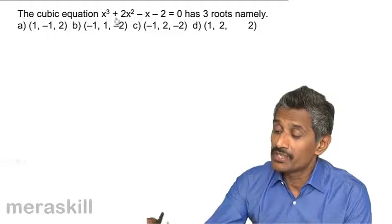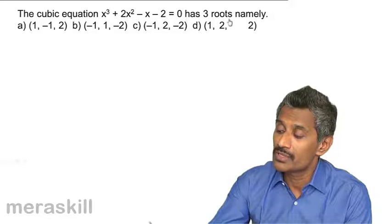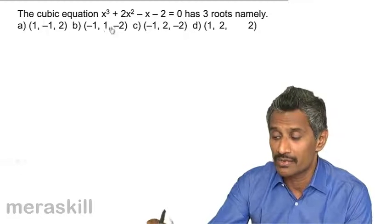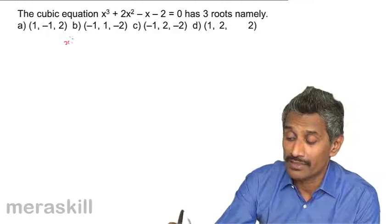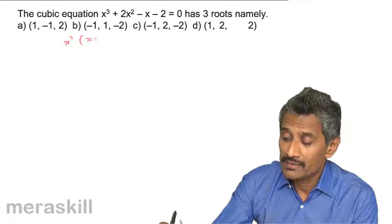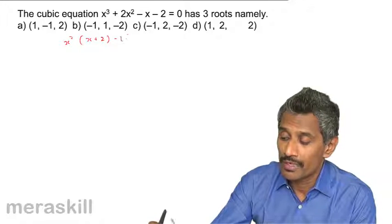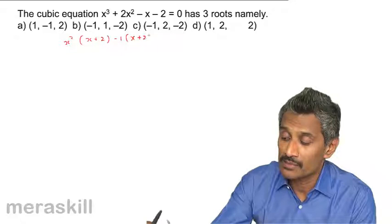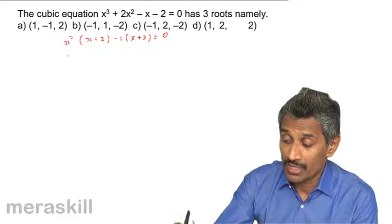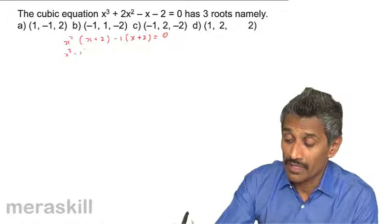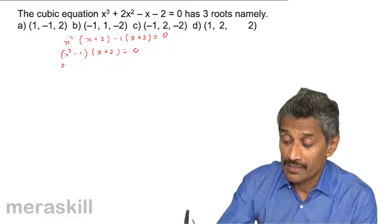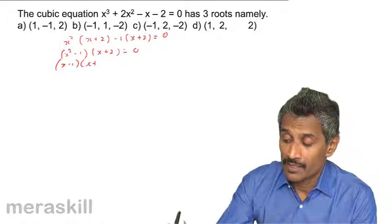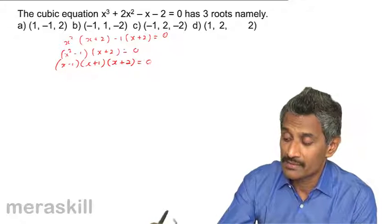The cubic equation x³ + 2x² - x - 2 = 0 has three roots. Looking at the terms: 2 is twice 1, and we can group them as x²(x + 2) - 1(x + 2) = 0. This gives (x² - 1)(x + 2) = 0, which factors as (x - 1)(x + 1)(x + 2) = 0.